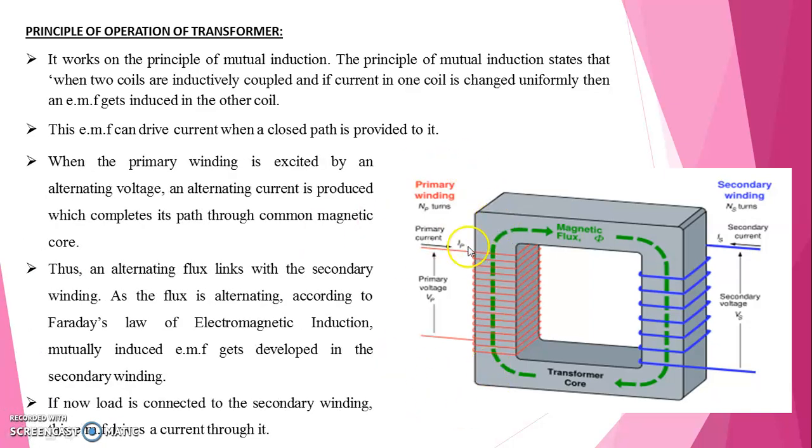When the primary winding is excited by an alternating voltage, an alternating current is produced which completes its path through magnetic core. It is common magnetic core. Thus, an alternating flux links with the secondary winding.